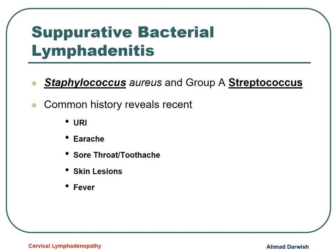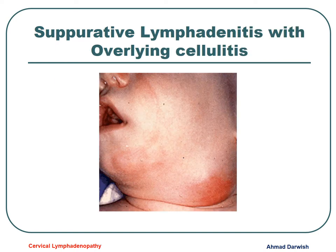For bacterial infection with pyogenic organisms like Staphylococcus and Streptococcus, we usually have high fever and infection in the face or neck. It could be just a history of sore throat, toothache, earache, upper respiratory tract infection, or a skin infection. Usually the skin above the lymph nodes shows signs of inflammation like cellulitis. Redness above the lymph node signifies a pyogenic bacterial cause and requires antibiotic treatment.